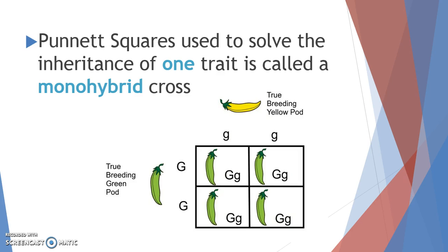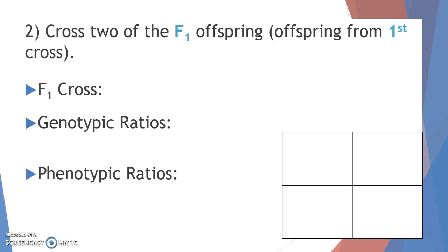Whenever you see a Punnett square asking you to solve the inheritance of one trait, you are conducting a monohybrid cross. We're going to be learning about a bunch of different inheritance problems, so it's important to know the names for those problems. The problem we just completed with the tall plant and the short plant is called a monohybrid cross.